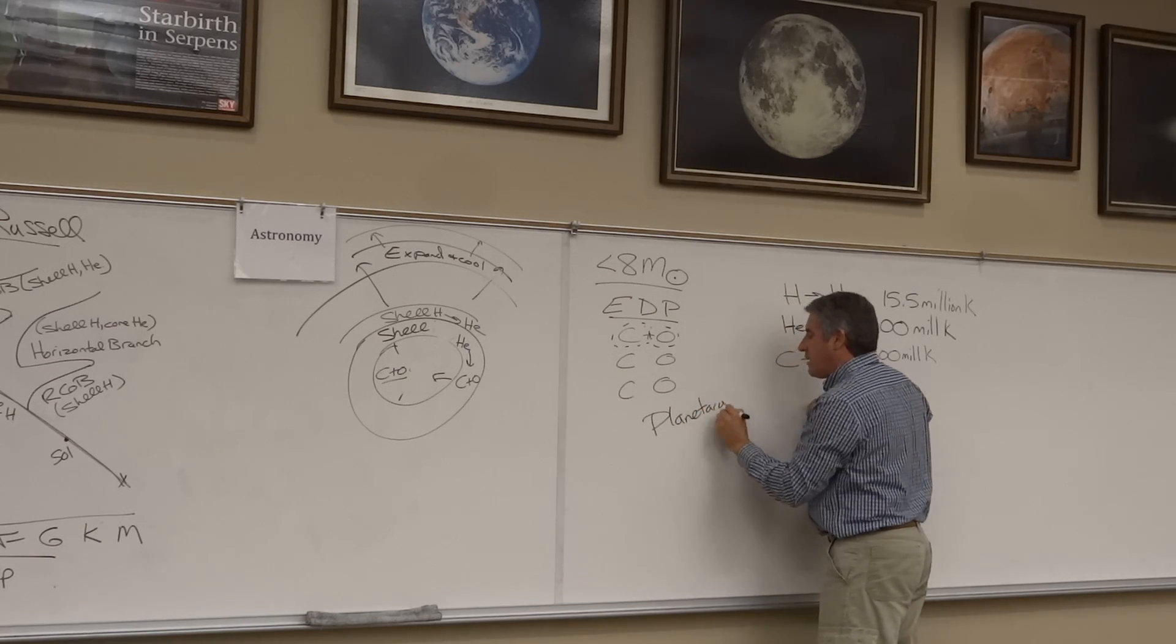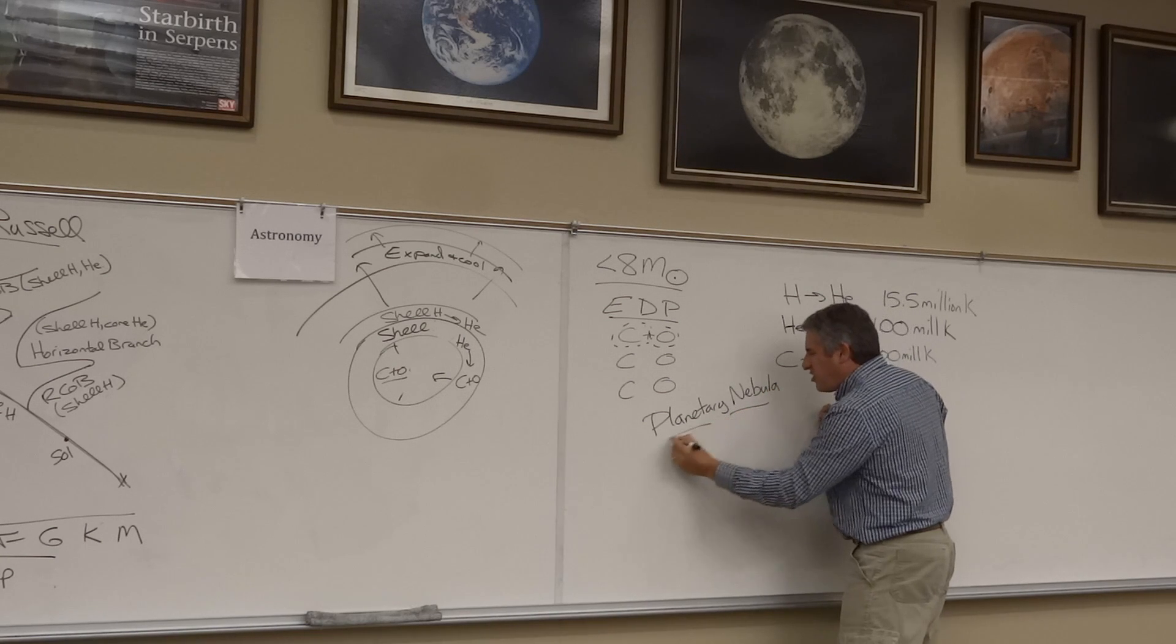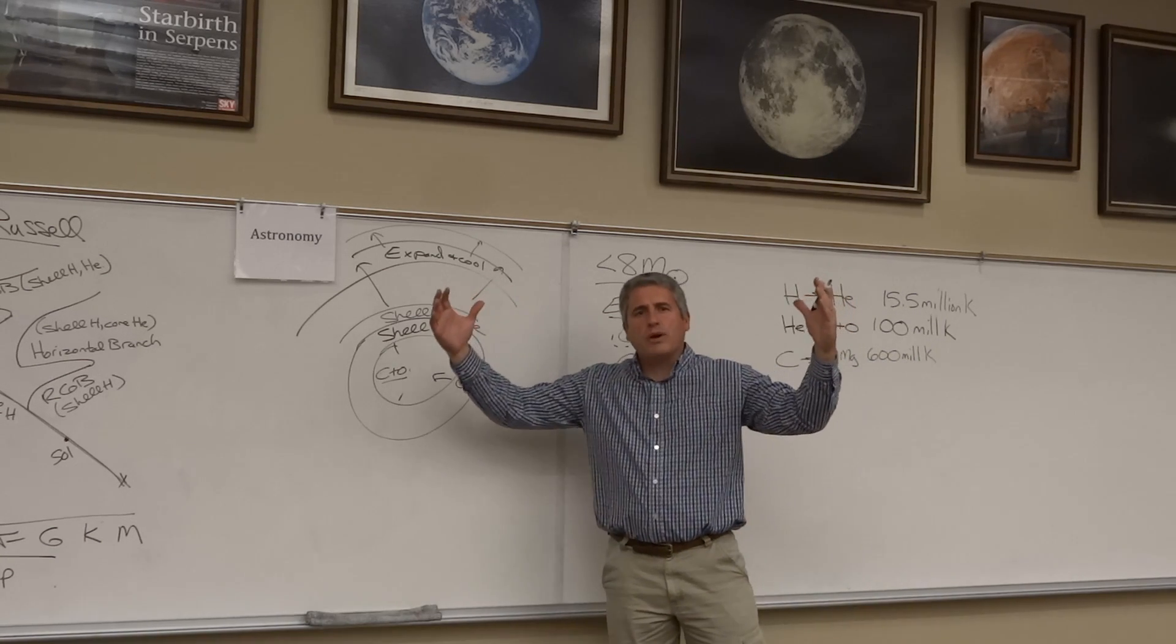So our Sun will sort of shed its outer layers in the form of something called a planetary nebula, a cloud of dust and gas that sort of expands away.